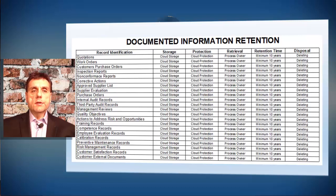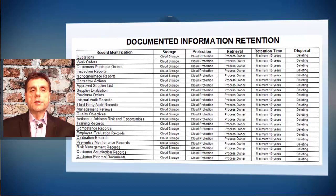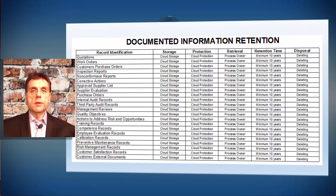Different records we could identify here include: quotations from our customers, work orders executed during operations, customer purchase orders, inspection reports, non-conformance reports, corrective actions, approved supply list, approved supplier list, supplier evaluation, purchase orders placed to our vendors and suppliers, internal audit records, and third-party audit records like registrar audit records or customer audit records.